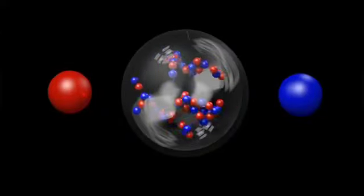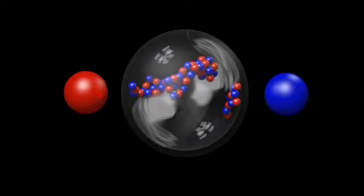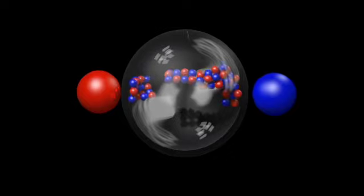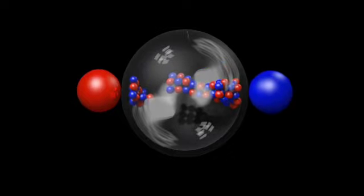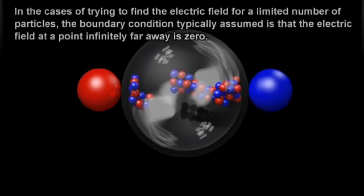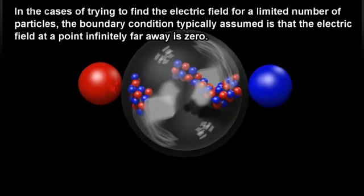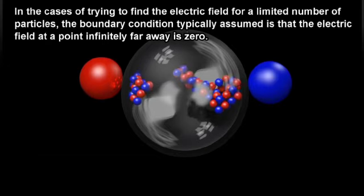As an analogy, Newton's laws of motion will give an infinite number of possible trajectories, unless we are given an initial position and initial velocity. In the cases of trying to find the electric field for a limited number of particles, the boundary condition typically assumed is that the electric field at a point infinitely far away is zero.